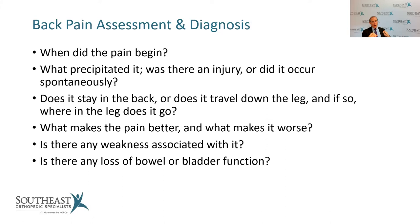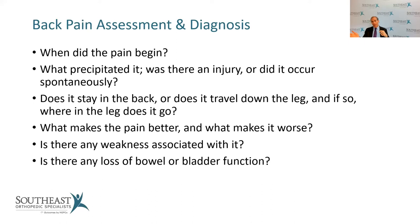Bowel-bladder dysfunction results from what we call cauda equina syndrome — compression of the horse's tail nerve roots. The nerve roots slowly get compressed in a condition called cauda equina syndrome, resulting in bowel-bladder dysfunction. This most likely occurs at or above the L3-4 level. There's a saying: 'L3-4 keeps it off the floor' — meaning if you lose bowel-bladder functioning, it's usually at or above L3-4.